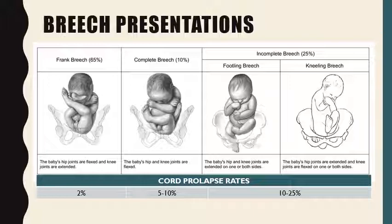With the cord prolapse rate, you can see on the bottom that with frank breech it's going to be about 2% cord prolapse. The reason for that is you're going to have less likelihood for the cord to slip beyond the position because the legs are extended up but the hips are well flexed. That incidence goes up for cord prolapse with complete breech because there's more room — the baby doesn't engage the pelvis quite the same way when the knees are bent down.